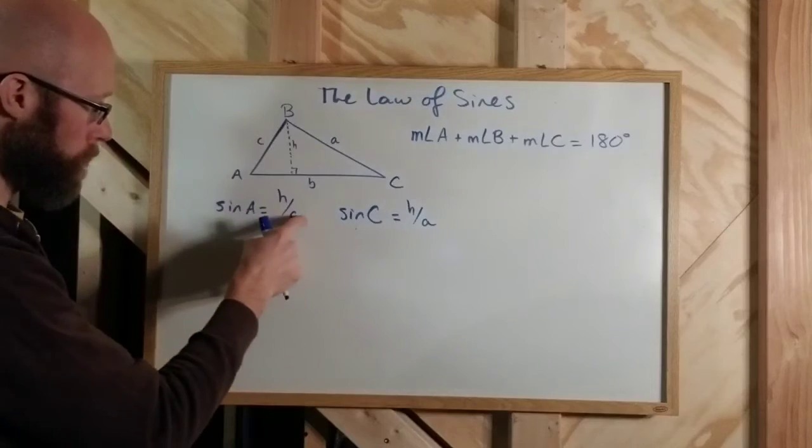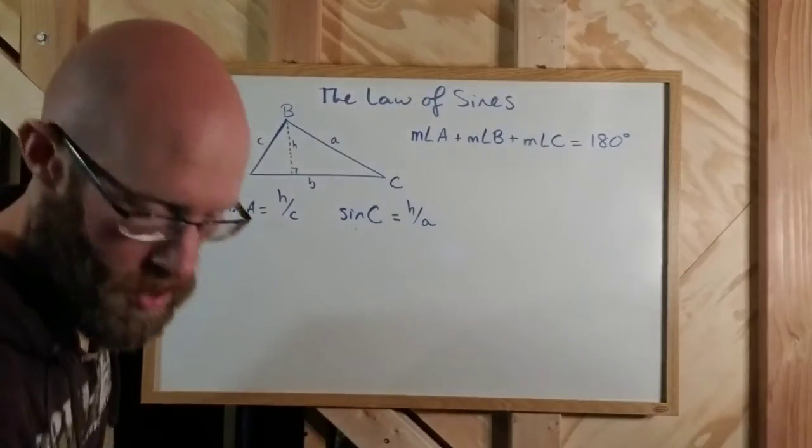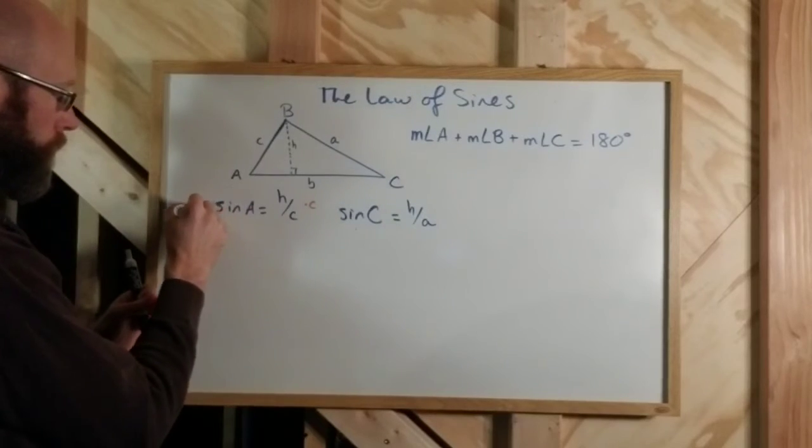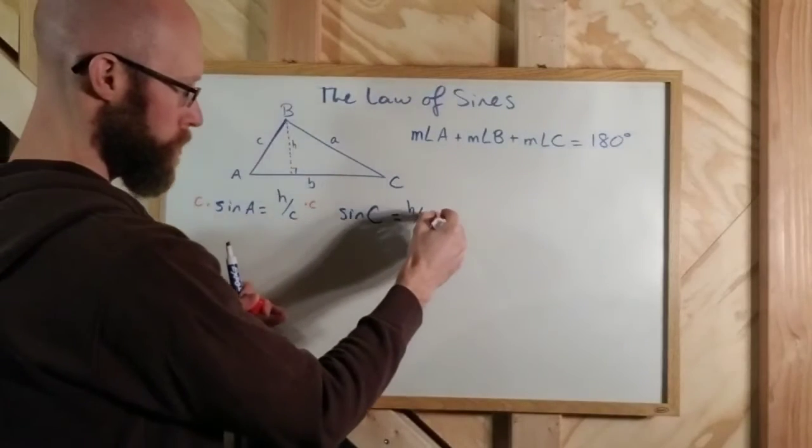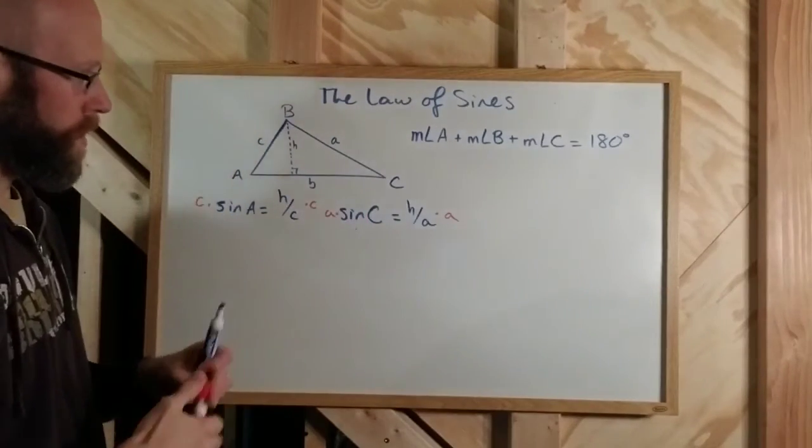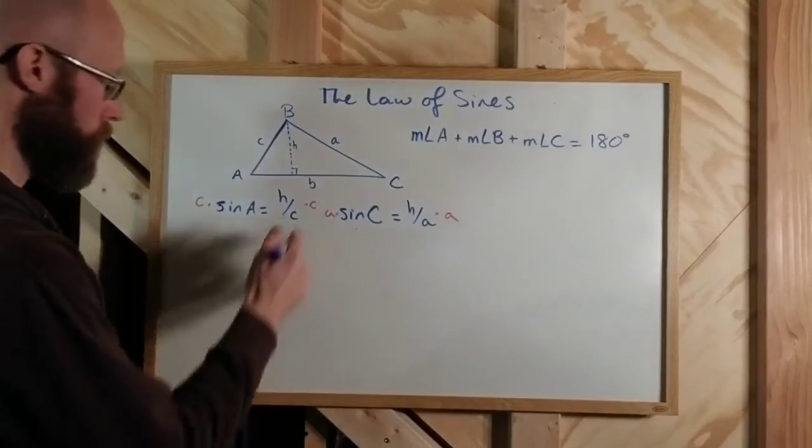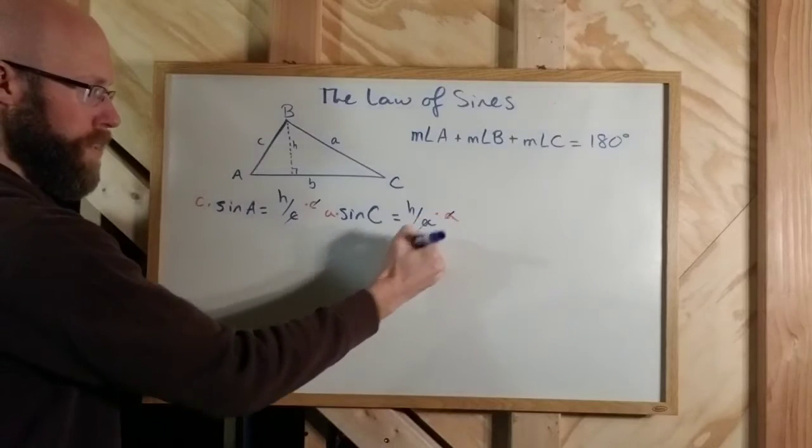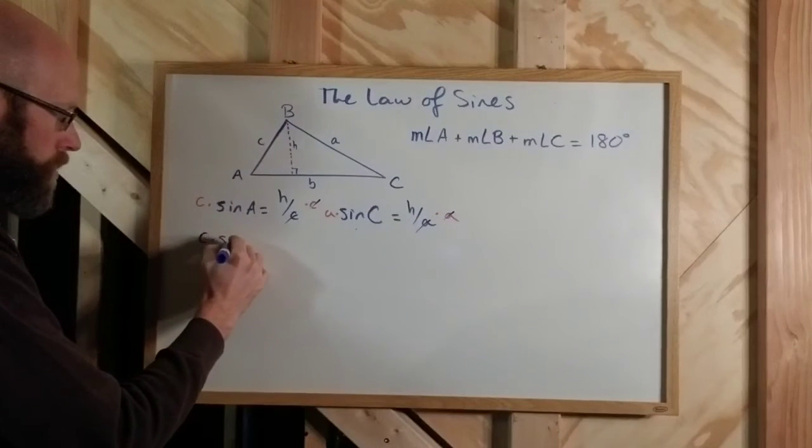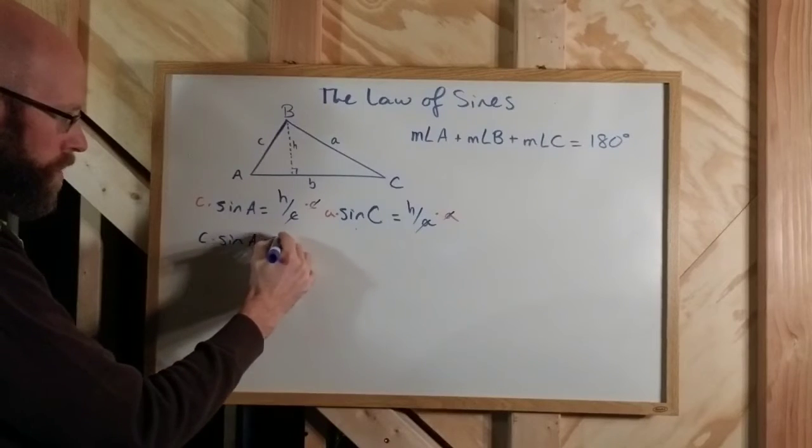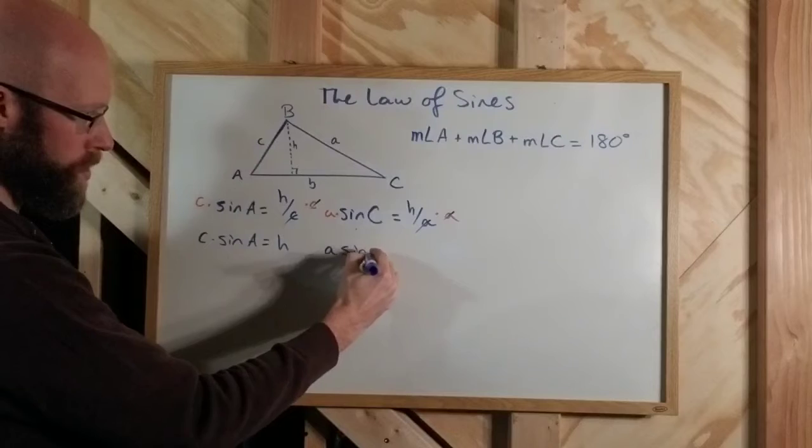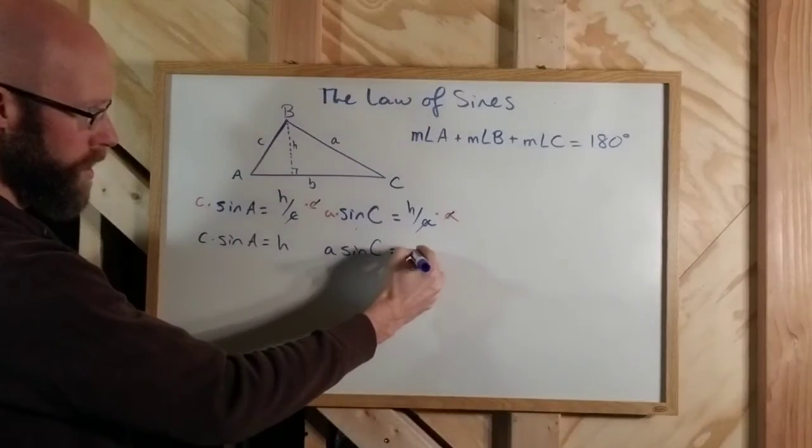To do that, I'm going to multiply both sides of this first equation by C to eliminate the C. And this one, I'm going to multiply both sides by A to eliminate the A. Alright, so the C's cancel off here, the A's cancel off there. We have C times the sine of A equals H. And over here, I have A times the sine of big C is equal to H.